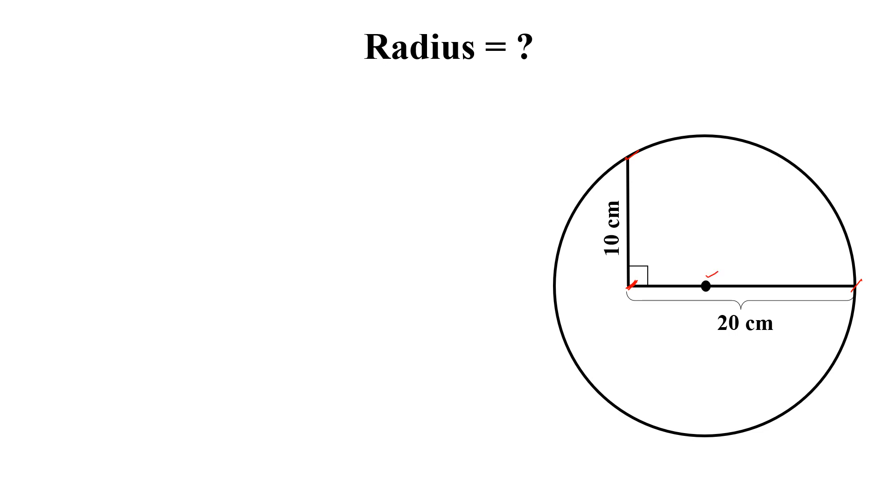How to calculate the radius of this circle? How can we solve this? Draw this radius of the circle. If this is r, then from here to here, this length will be also r and this length will be 20 minus r.